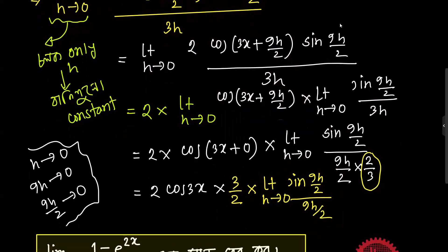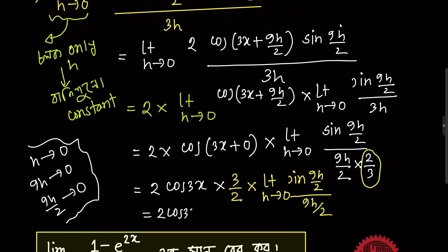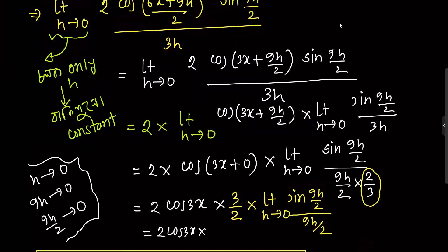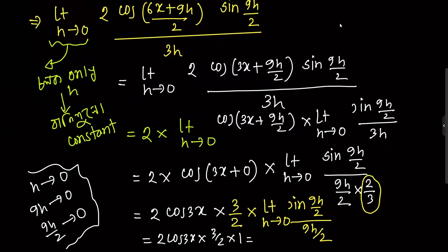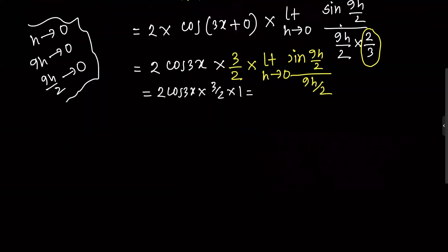So we have 2 cos 3x into 3 by 2 into 1. Simplifying, 2 times 3 by 2 equals 3. So the final answer is 3 cos 3x.